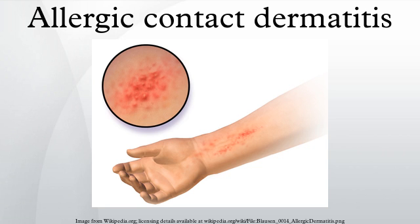Once an individual is sensitized to an allergen, future contacts with the allergen can trigger a reaction in the original site of sensitization. For example, if a person has allergic contact dermatitis on the eyelids from use of makeup, touching the contact allergen with the fingers can trigger an allergic reaction on the eyelids. This is due to local skin memory T cells which remain in the original sensitization site. Memory response, or retest reactivity, usually takes two to three days after coming in contact with the allergen, and can persist for two to four weeks.